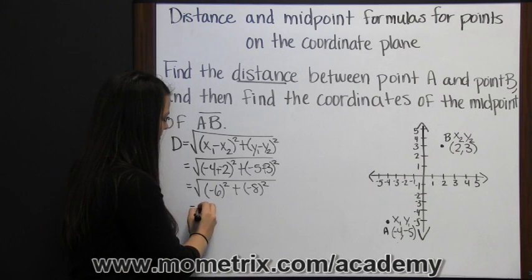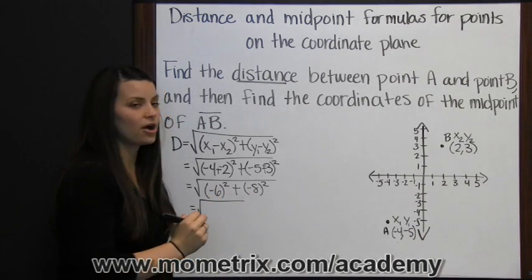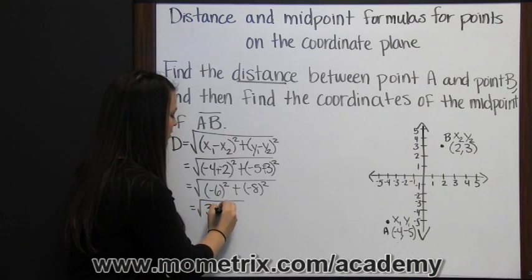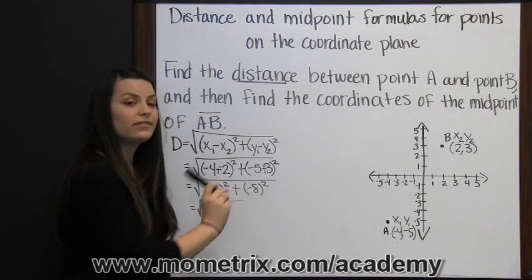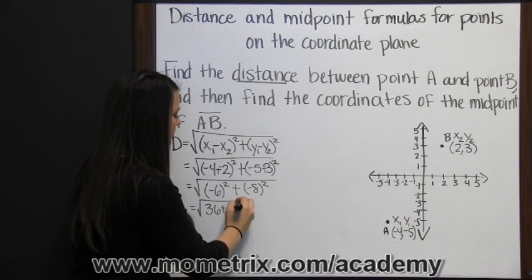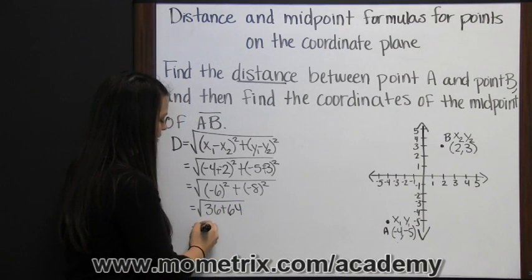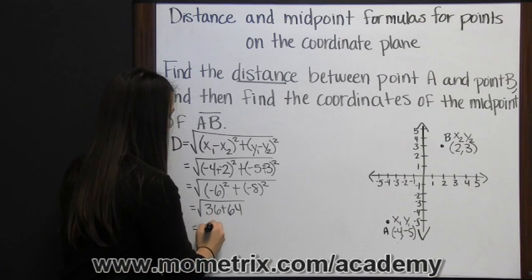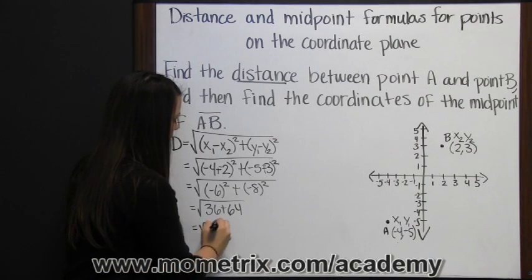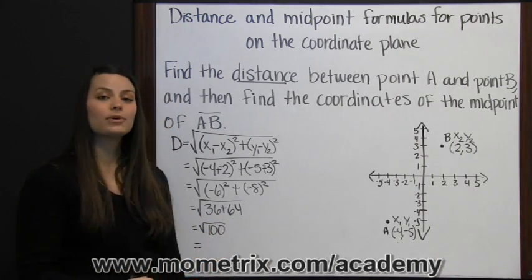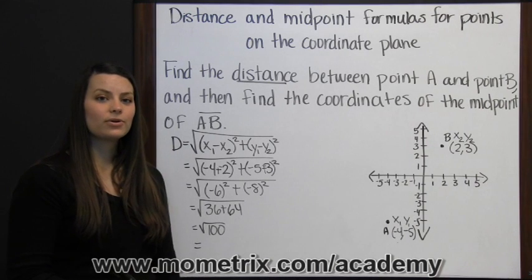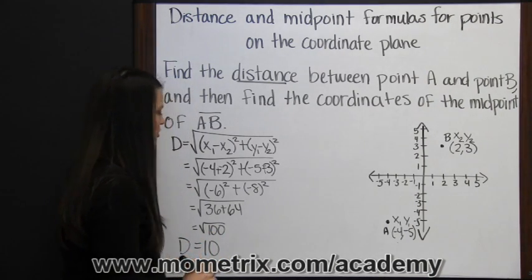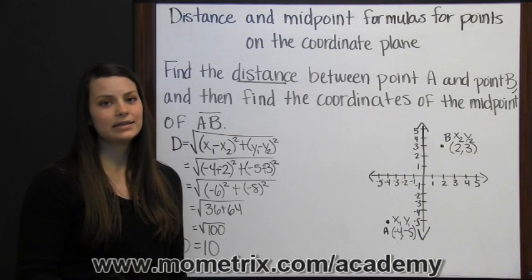Now I'll apply the next step in PEMDAS: exponents. Negative 6 squared is 36, plus negative 8 squared is 64. Adding those together, 36 plus 64 is 100, so we have the square root of 100. The square root of 100 is 10, so the distance between points A and B is 10.